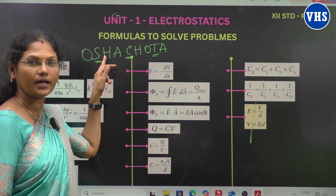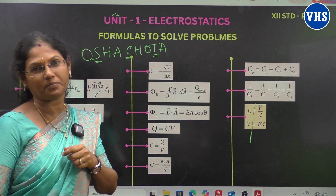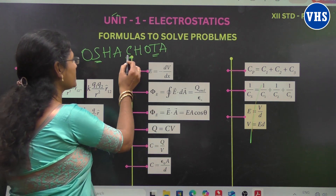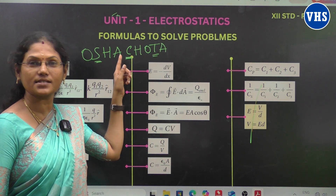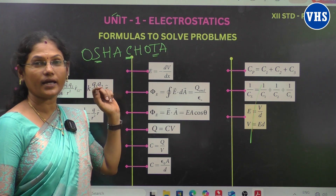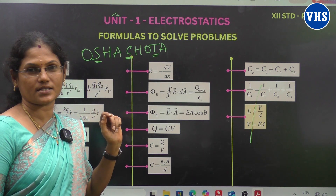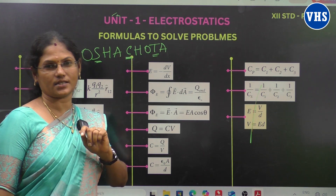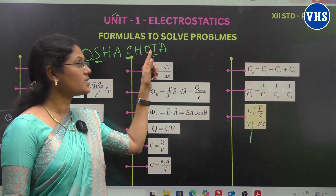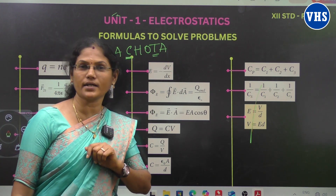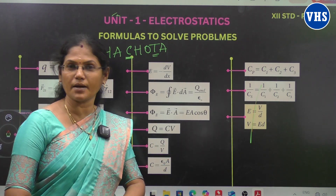O stands for opposite side, S for the hypotenuse side. Sin theta is equal to opposite by hypotenuse. Next, cos theta — A stands for adjacent. Cos theta is equal to adjacent by hypotenuse. And the third one, tan theta is equal to opposite by adjacent. That is the SOH-CAH-TOA formula.